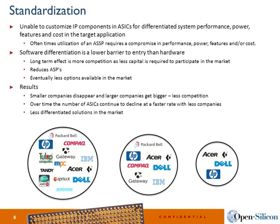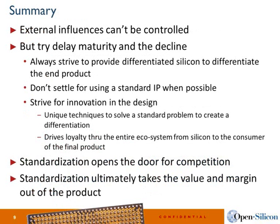As we look at how we're going to build our next-generation IP semiconductor products, we have to keep in mind not allowing the world to be consolidated by big companies, and try to differentiate as much as we can for a longer life cycle. In summary: external influences can't be controlled, but we should try our best to delay the maturity and decline of our market. Always try for differentiation — don't take shortcuts just because it's faster. Try not to settle and strive for innovation as much as possible. Standardization opens the door for competition and will ultimately take the value and margin out of products.